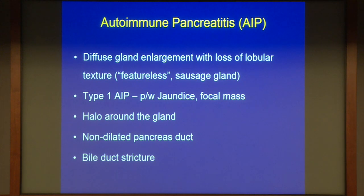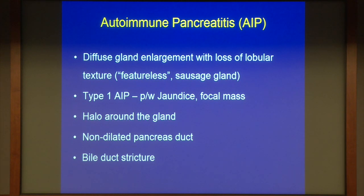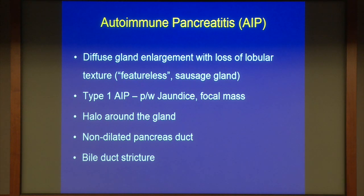Top of the list: autoimmune pancreatitis. It's a relatively rare disease, but we're seeing and recognizing it more now. It presents as diffuse enlargement of the gland — uniform enlargement with loss of lobular architecture, so the gland looks like a banana or sausage shape. There are two distinct types. Type 1 is IgG4-related, presents with obstructive jaundice, and can have a focal mass in the head from biliary stricture. You can see how confusing this can be. But a clue is a halo around the pancreas and, importantly, a non-dilated pancreatic duct.